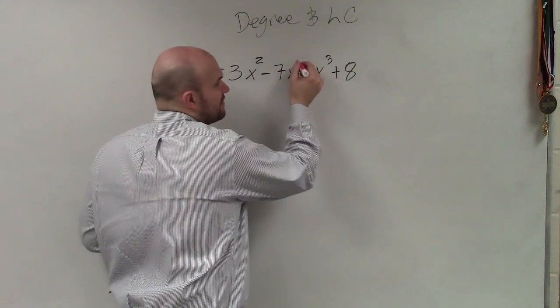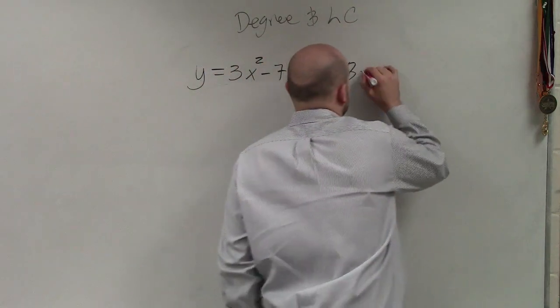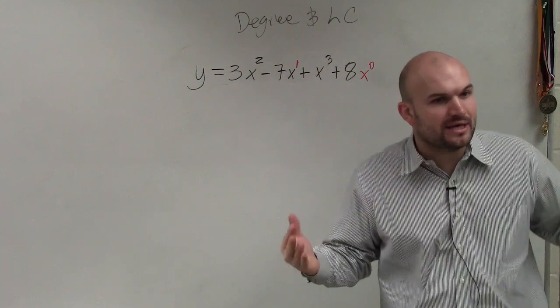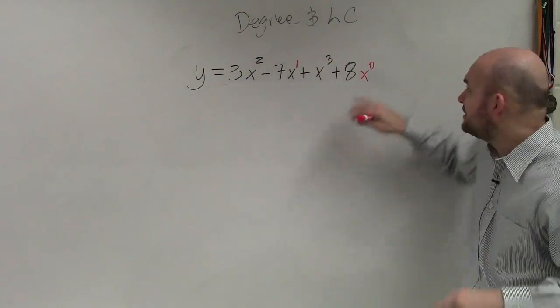There's a couple power degrees that we do not see up here. Notice when you have x, that is really just x to the first power. And if you don't have a variable, that's really x to the zero power. So that means every monomial has a degree or a power. Every single one, even if it's not shown.